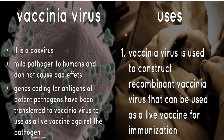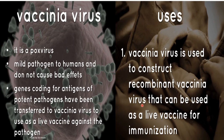Vaccinia virus is a poxvirus and a mild pathogen to humans that does not cause bad effects. Genes coding for antigens of potent pathogens have been transferred to vaccinia virus to use as a live vaccine against those pathogens. Vaccinia virus is used to construct recombinant vaccinia virus that can be used as a live vaccine for immunization.